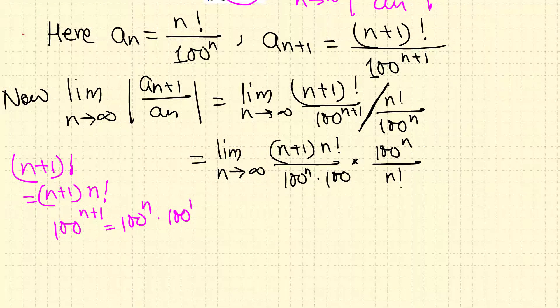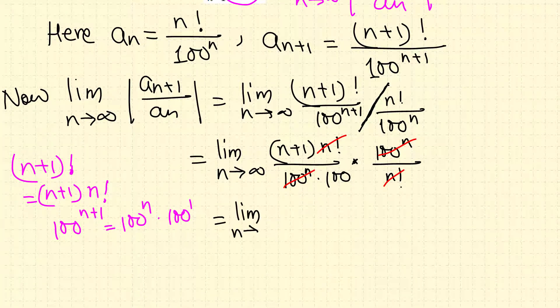Now we can cancel a couple of things here: 100 raised to n cancels, n factorial cancels. Then this limit is in fact the limit as n goes to infinity of (n+1) over 100.